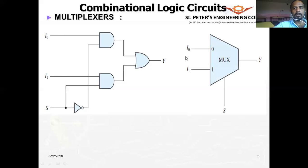This is the general figure of what a MUX looks like. It is represented as a wedge shape — broader on the input side and narrower on the output side, because it has more inputs and only one output. The select lines are also shown on the diagram.